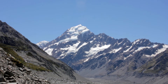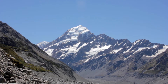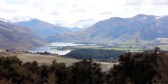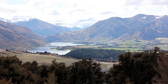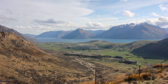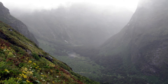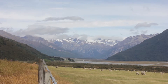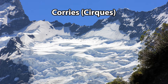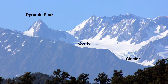Glacial erosion carves out a variety of landforms. Even in regions where there are no glaciers, many landforms are evidence that they once existed there. The South Island of New Zealand has hundreds of fjords, ribbon lakes, and U-shaped valleys that exist as reminders of the giant glaciers that once were there. A corrie, also known as a cirque, is an erosion feature formed at the starting point of a glacier.